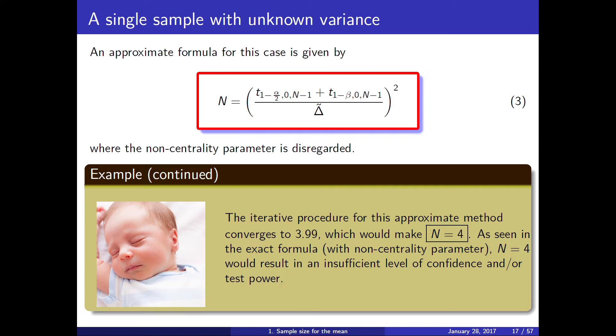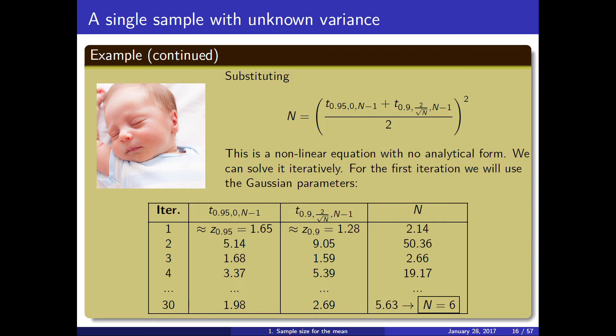The iteration converges to n = 4. This is a very approximate method to calculate n, but it gives an idea of the difficulty of solving these equations — finding a point where alpha lies to one side and beta lies on the other distribution. From now on, we will not solve them manually but assume there is a program to calculate n.